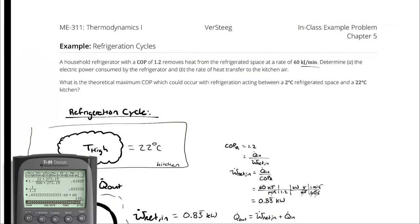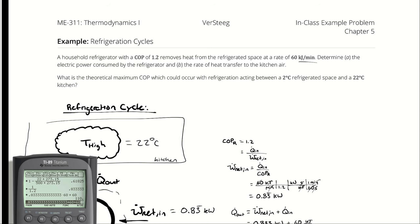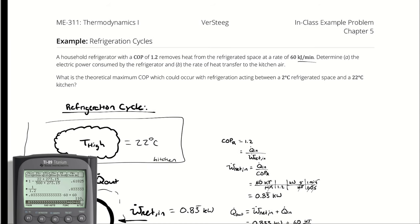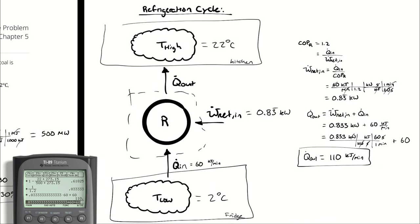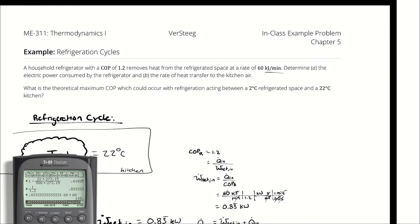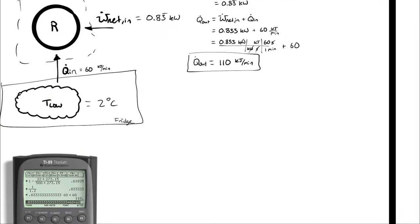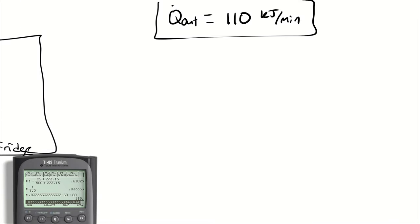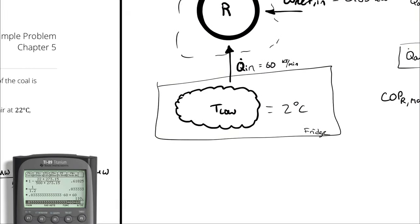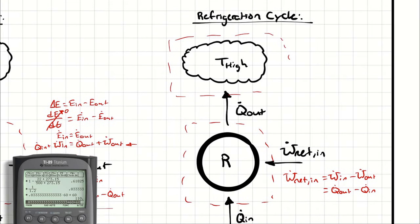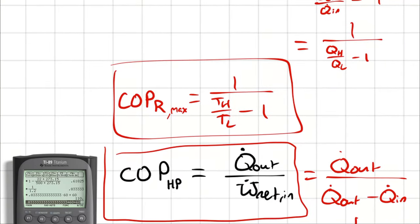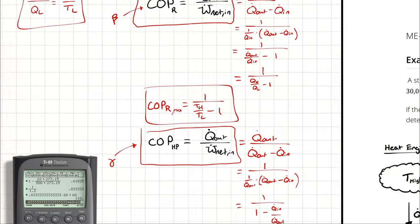The last thing I asked for was the theoretical maximum coefficient of performance that could occur if this refrigerator was acting between a 2 degree refrigerated space, so T_L is 2 degrees, and a 22 degrees Celsius kitchen, so T_H is 22 degrees. Well, we can use that equation we came up with earlier. COP_R_max, which comes from when we treat the refrigeration cycle as a Carnot refrigerator, is going to be 1 over T_H over T_L minus 1.